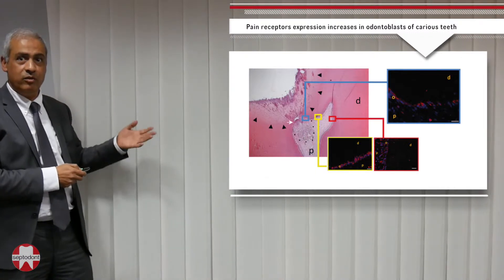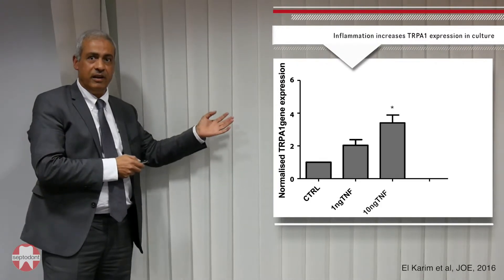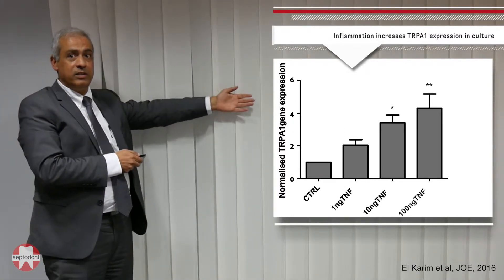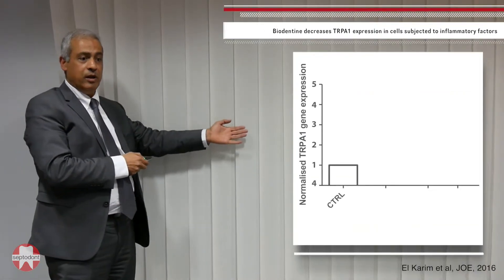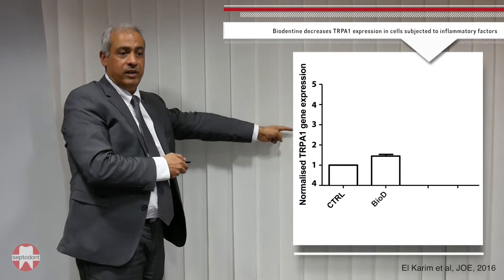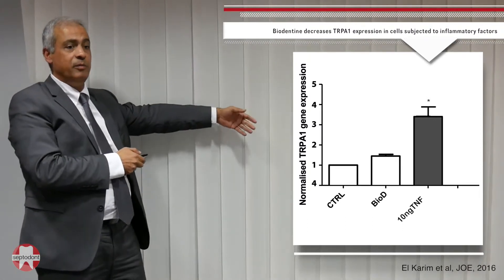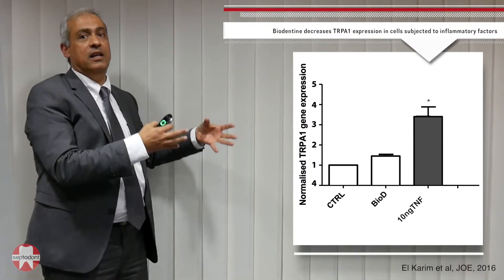Can we reproduce this in vitro? The answer is yes. We took fibroblasts and applied a pro-inflammatory factor called TNF-alpha. As you can see, there is a dose-response effect: the more TNF-alpha added, the higher the increase of this receptor. When biodentine alone is applied, there is no increase in expression, but with TNF-alpha there is a high increase, indicating the cells are subject to inflammation.